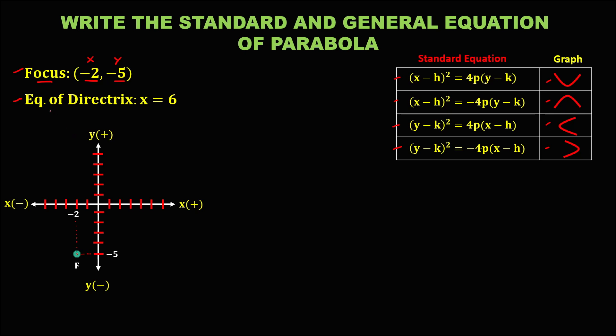For the equation of the directrix, x equals positive 6. So this is x equals positive 6, and we now have the equation of the directrix plotted on the graph.